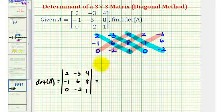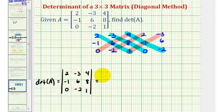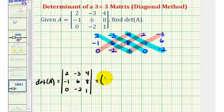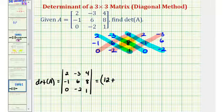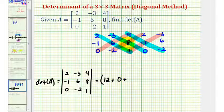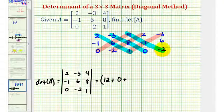We start with the sum of the product of the blue diagonals, or the diagonals from the upper left to the lower right. So we'd have two times six times one, that's twelve, plus negative three times eight times zero, that's zero, plus four times negative one times negative two, that's positive eight.